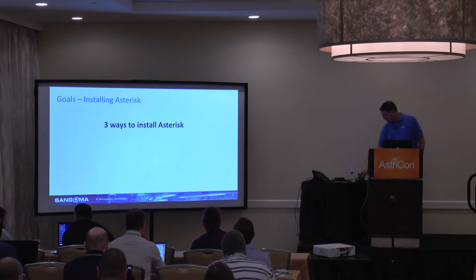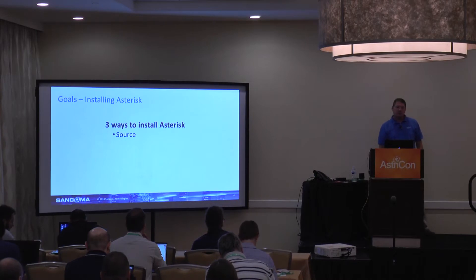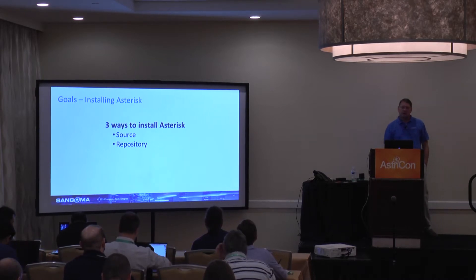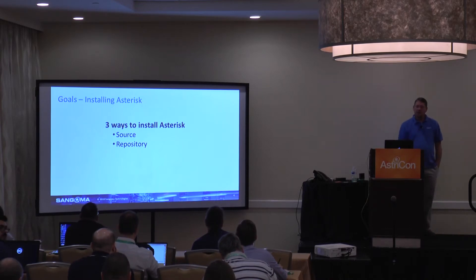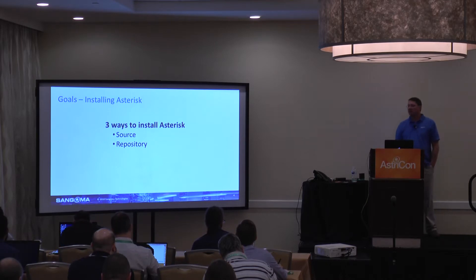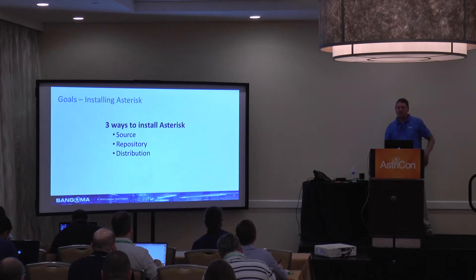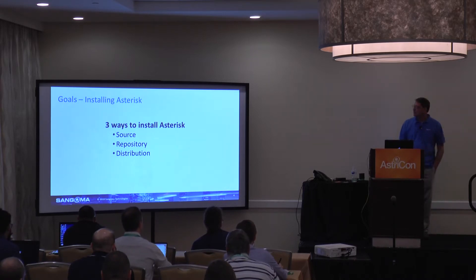There are three ways we can install Asterisk. We can compile it from the source — download the source, compile it, and install it. We can get it from one of the repositories; if you're using CentOS you could yum install Asterisk, though that's not the best way because you don't know which version you're getting. Or you can use a distribution like FreePBX or AsteriskNow, which includes FreePBX and installs Linux, Asterisk, and a GUI on top of it — and that's pretty popular.